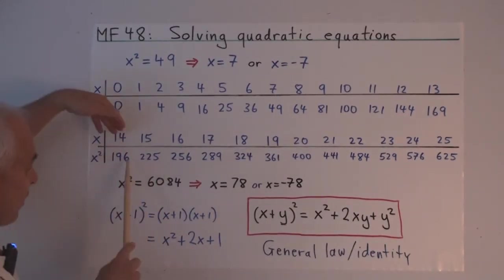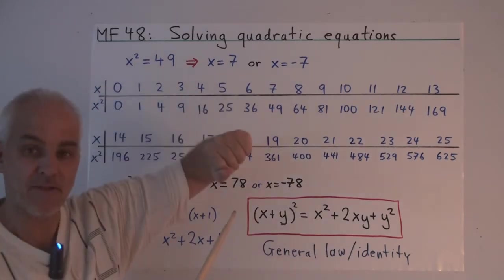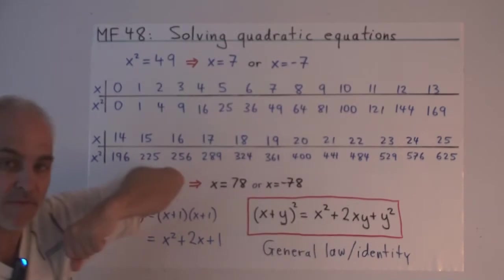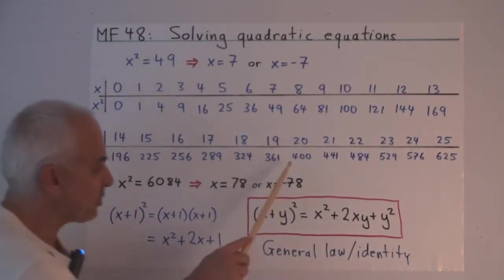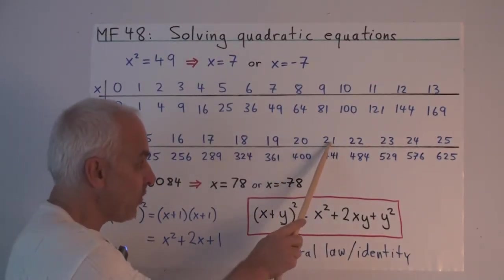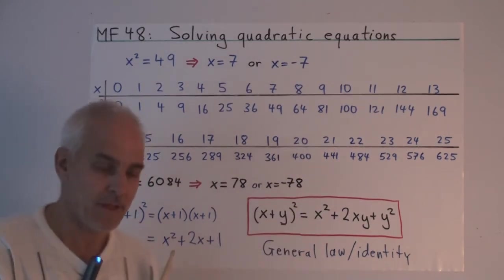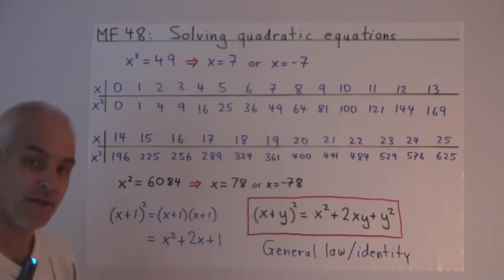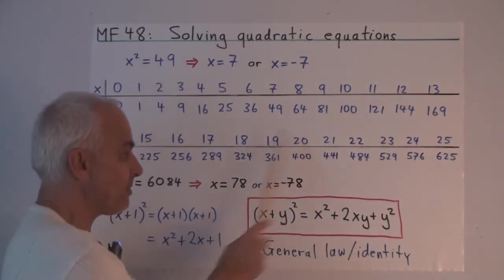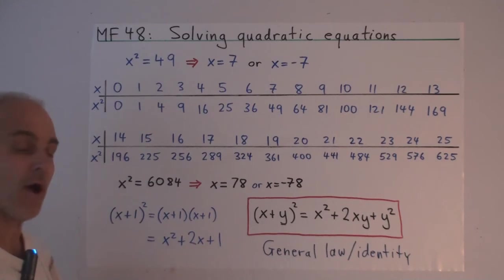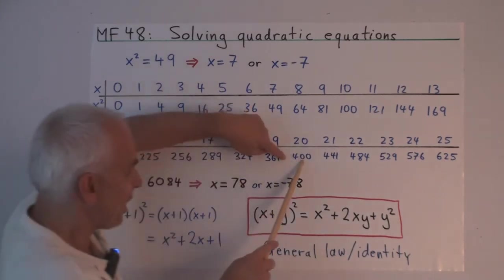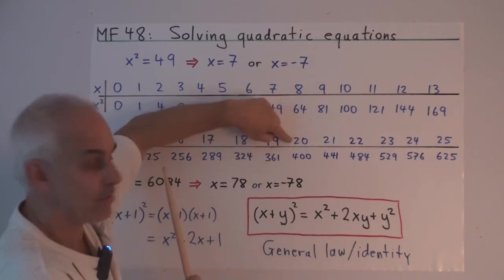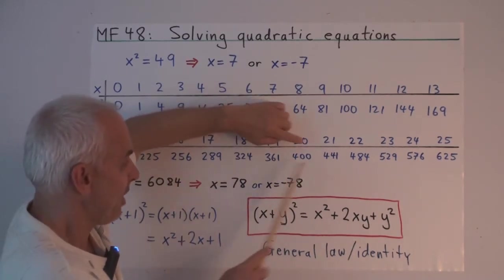And this is important because, first of all, it allows us to generate this table a little bit more efficiently than squaring each individual fellow. For example, suppose we know that 20 squared is 400, and we want to know what is 21 squared? Well, according to this little rule, it's 20 squared plus 2 times 20, which is 40, plus 1. So to go from here to here, we just take this one, and we add 2 times the value here, which is 20, and add 1.